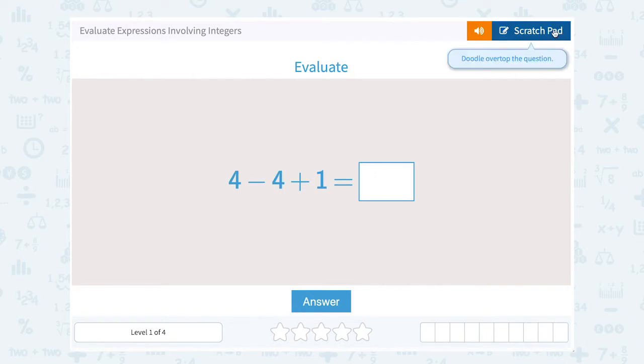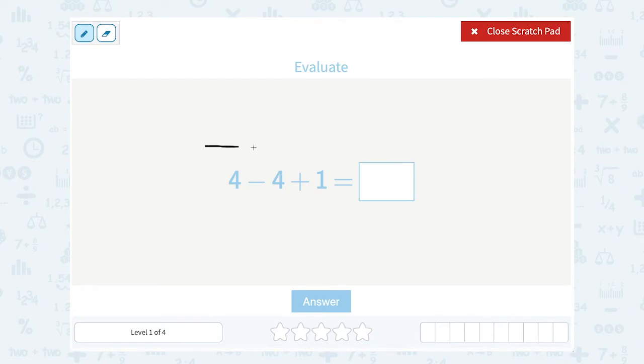Okay, well when you're adding or subtracting, you can go from left to right, since they're on the same level. So I'm going to start this problem by saying 4 minus 4 gives me 0, and then I still have to add 1. Well, 0 plus 1 is 1, so the answer to the whole thing is simply 1.